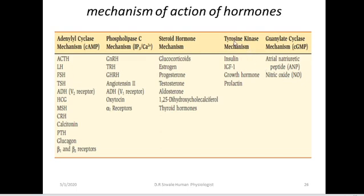Hormones that activate the enzyme tyrosine kinase include insulin, insulin-like growth factor 1, growth hormone, and prolactin. Then we have steroid hormones, which act by the steroid hormone mechanism. Then there is the phospholipase C mechanism — mainly these are water-soluble hormones, not lipid-soluble. These usually act by phospholipase C, and most that use the adenylyl cyclase mechanism are also water-soluble hormones.